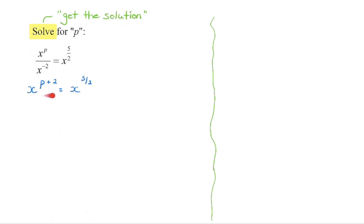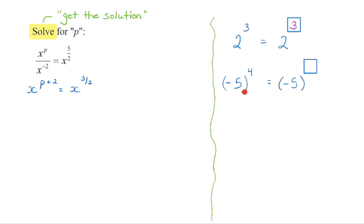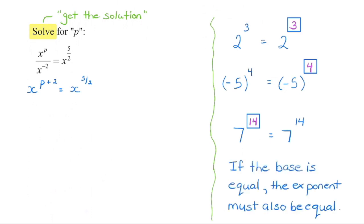We now have an exponential equation where the exponent contains a variable. Here's the key concept: if two powers are equal and the bases are equal, then the exponents must also be equal. For example, if 2 to the power of 3 equals 2 to the power of something, that something must be 3. Likewise, negative 5 in brackets to the power of 4 equals negative 5 to the power of 4. And 7 to the power of something equals 7 to the power of 14, so that something must be 14. If the bases are equal, the exponents must be equal.